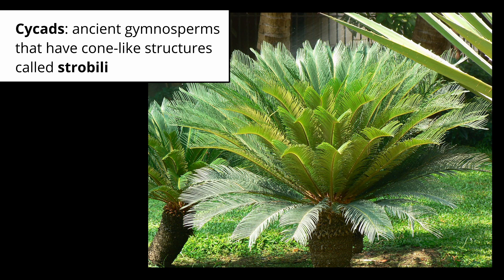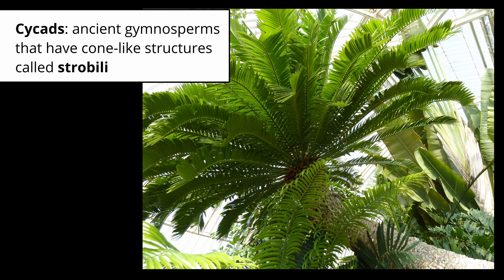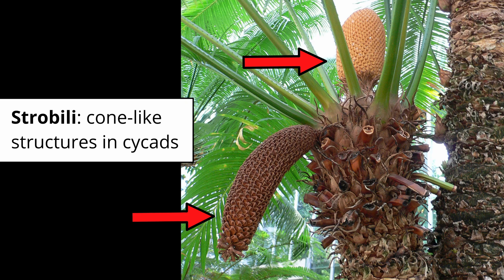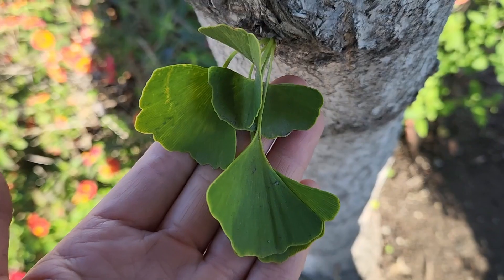An interesting group of gymnosperms you may work on are the cycads. They look like little palms but they actually produce cone-like structures called strobili.